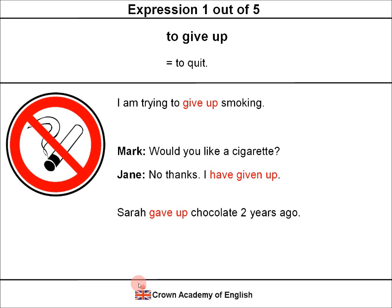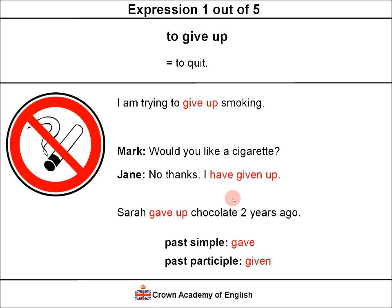Sarah gave up chocolate two years ago. Here is some grammar: the verb give is irregular, and the past simple form is gave. We are talking about a specific moment in the past, so we use the past simple: gave up. The past participle of give is given, as seen in 'I have given up,' which is the present perfect.